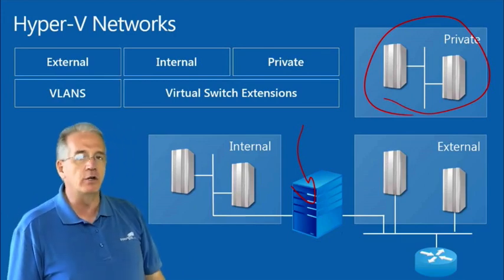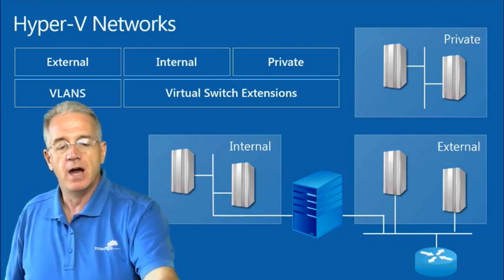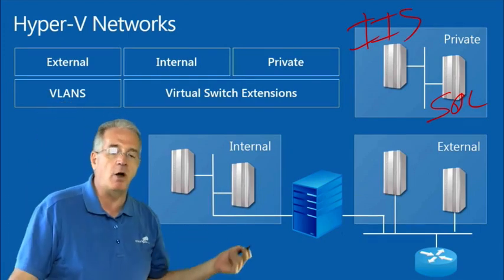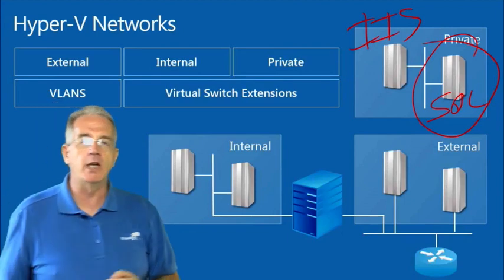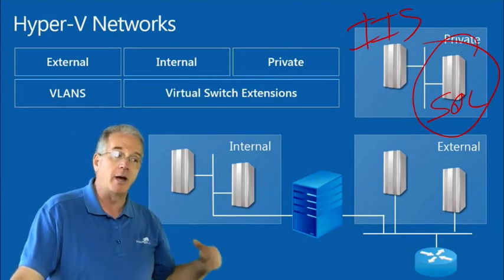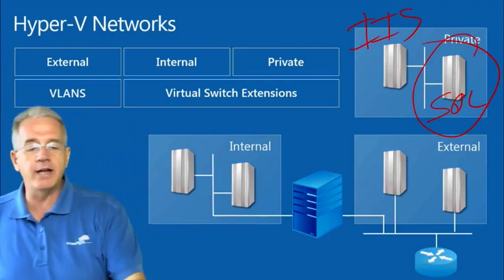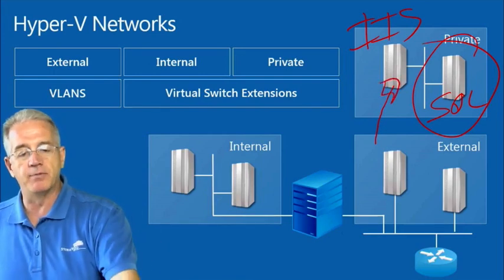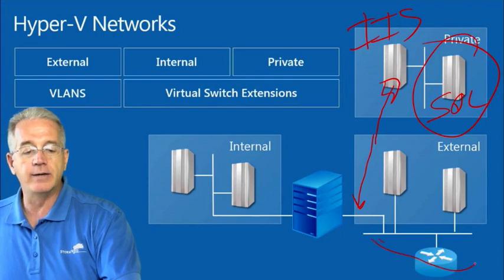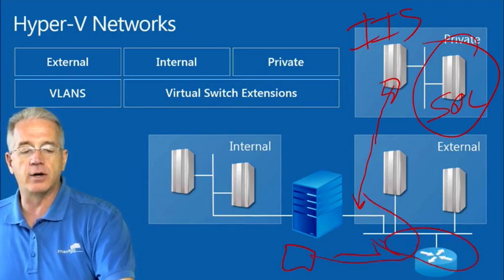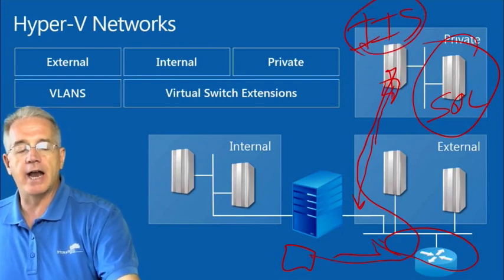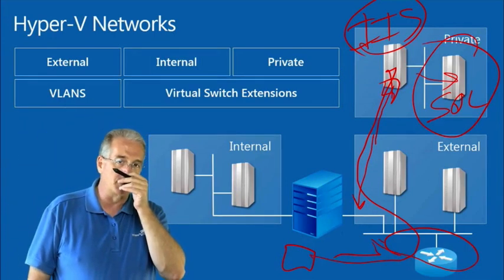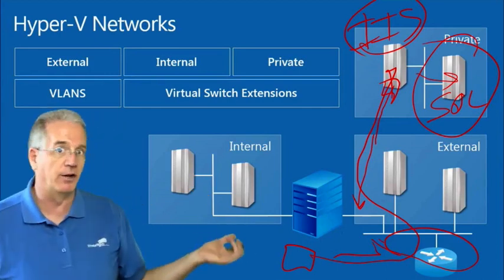In many solutions you'll see a combination. For example, if I have a SQL server and an IIS server, and I don't want the SQL server exposed because it has credit card processing information, I keep it completely separate. On the IIS server, I can add a separate virtual network adapter that's plugged into an external network. Clients can reach that web server via that network adapter, but they're not allowed to talk directly to the SQL server because it's in a separate private network.